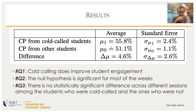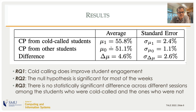Cold calling does improve student engagement as we measure it. Looking at the table, the average self-reported class participation when cold called was about 56 percent as opposed to 51 percent from all students, with a standard error on the difference of about 2.6. So it's a 4.6 percent improvement — marginally significant. For research question two, the null hypothesis was deemed significant for most weeks, and for research question three, we could not statistically answer the question due to insufficient data.